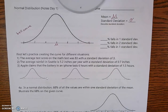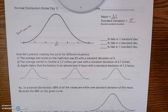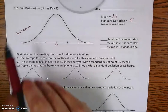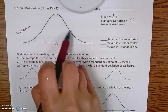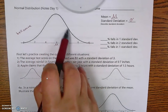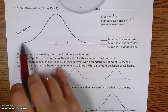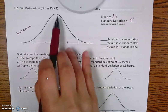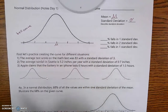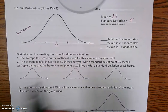Today we're going to start talking about normal distribution, which is statistics. There's some important vocabulary when it comes to statistics. First of all, this shape is called a bell curve. We're going to use a bell curve when we're talking about percentages over the next few days.